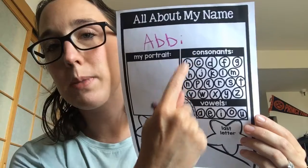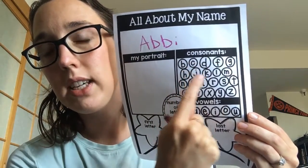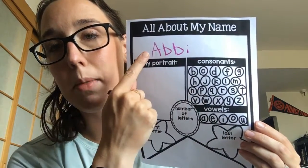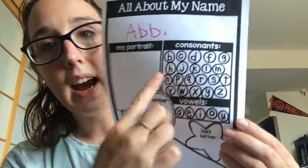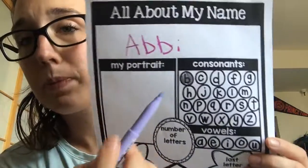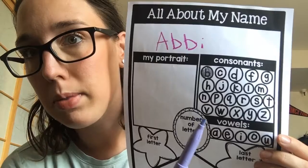Next, I'm going to do this part here which says consonants. We can see all of these letters here. I'm going to look and see if any of these letters are in my name. I can see that I have a B in this bubble, and Bs in my name. So I'm going to take a highlighter and highlight the B bubble. Now I have two Bs, but I'm not going to color in my B twice because that would be silly.